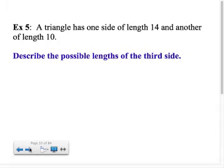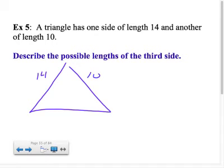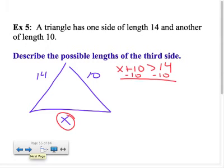Example 5 says a triangle has one side length of 14 and another of 10. Describe the possible length of the third side. So just draw a quick picture. Here's 14, here's 10, call this guy X. What I'm going to tell you is you have to assume two cases. The first is assume that X is the shortest side. If X is the shortest side, well then the inequality that you would have to test would be the short side plus the middle side is greater than the longest side. And when you solve that, you subtract 10 from both sides, and what you end up getting is X is greater than 4.